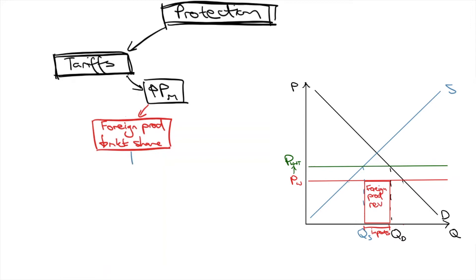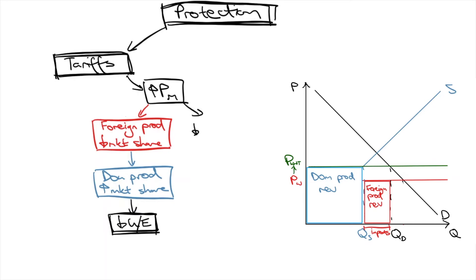Domestic producers get to expand the supply, and as seen by this box, get increased revenue. This could then lead to increased domestic employment. That's good news, but for consumers, higher prices lead to less consumer choice, as seen by the contraction in demand here.